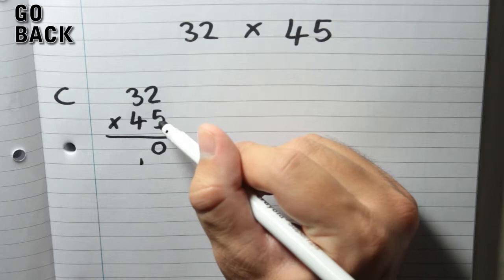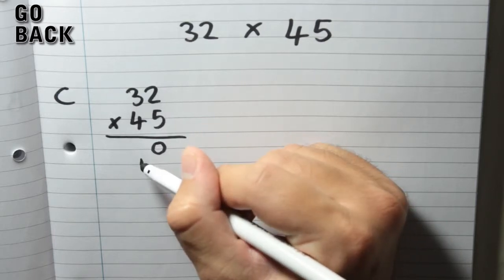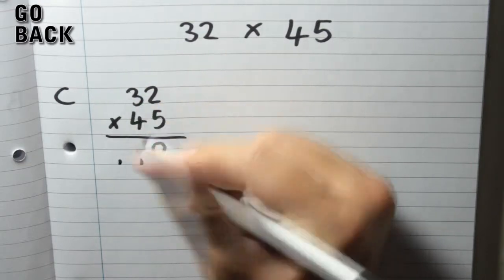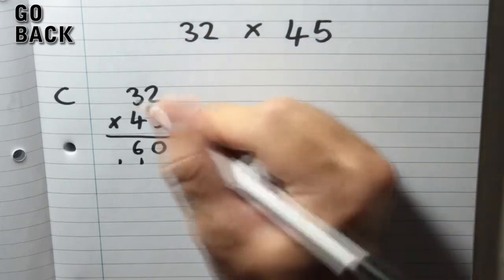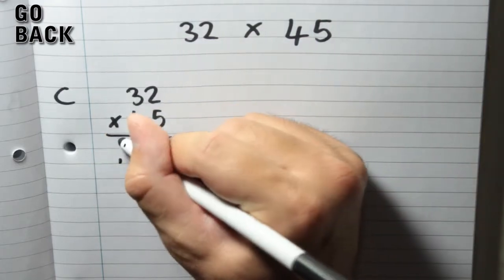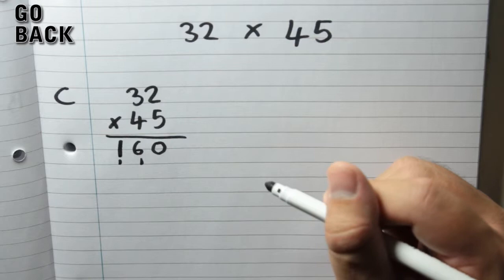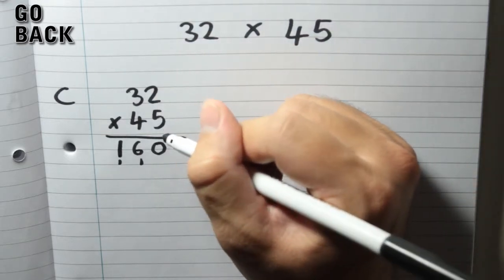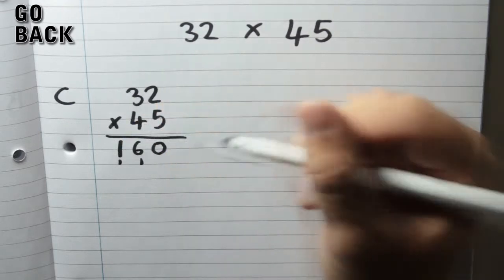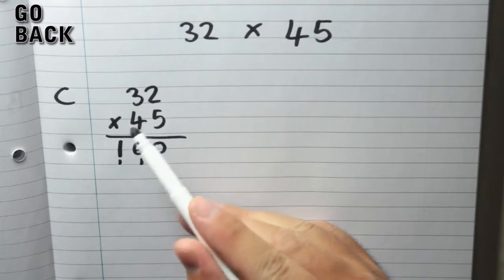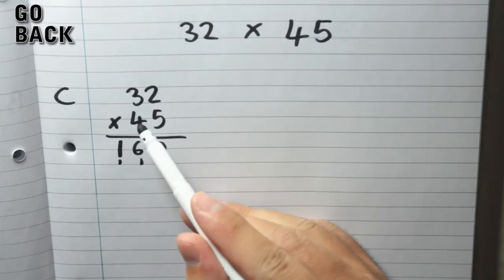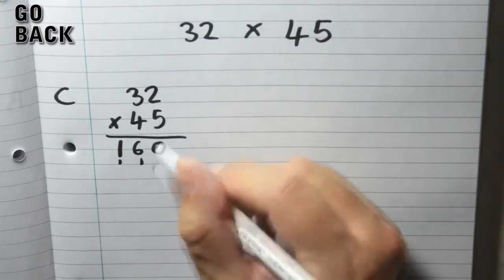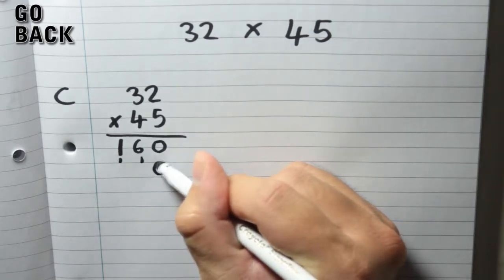3 times 5 gives 15. Add the 1 and you get 16. So a little 1 under what would be the 100s column, 6 there, and we bring the 1 up: 160. So what we've worked out here is 32 times 5. Now we're going to do 32 times the 4, but that 4, remember, isn't really a 4 — it's worth 40, since it's in the 10s column. Which is why we have to put a 0 in here before we start.